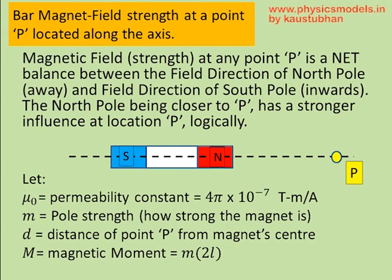So, the effect of the north pole is going to be stronger on point P just because it's closer to P. The effect of the south pole is going to be weaker. So, we have to find the total balance of the magnetic field at point P. That's all there is to this.